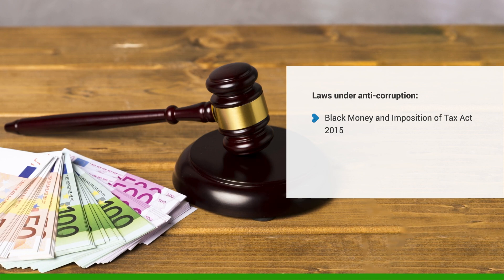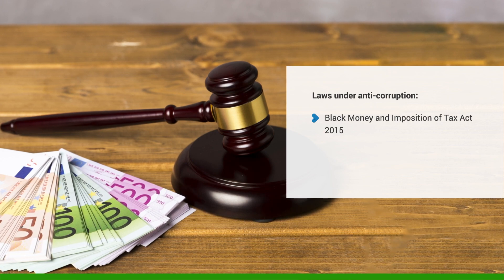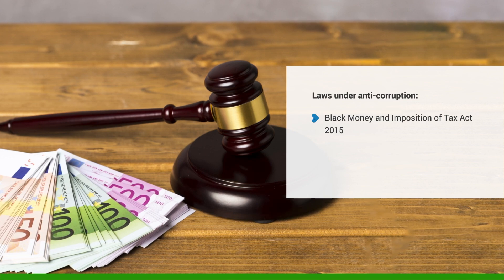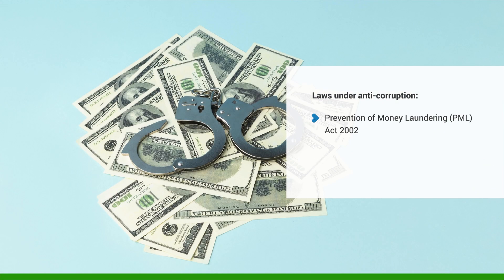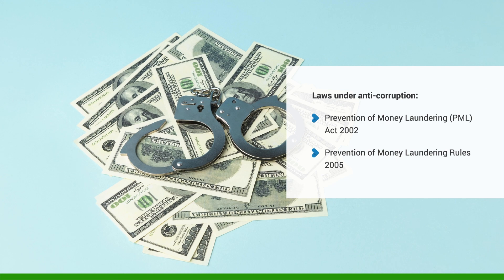The Black Money and Imposition of Tax Act 2015 regulates undisclosed foreign income and assets and imposes penal taxes on them. Additional criminal liabilities have also been included under the legislation for non-disclosure of foreign assets. The Prevention of Money Laundering (PML) Act of 2002 and the Prevention of Money Laundering Rules 2005 prohibit and criminalize money laundering activities in India. Under the PML Act, money laundering is defined as any process or activity connected with the proceeds of a crime listed in the schedule to the PML Act.